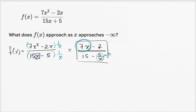It doesn't matter that you're subtracting two — that'll make it even more negative. It doesn't matter if you then divide by 15; you're still approaching negative infinity. If you have an arbitrarily negative number and divide by 15, you still have an arbitrarily negative number. So f of x is going to go to negative infinity.